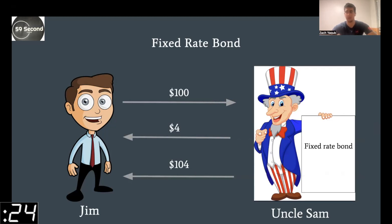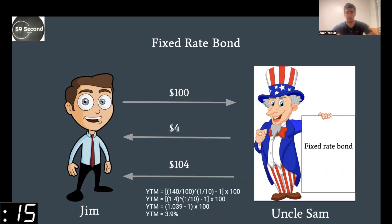What if Jim had invested his money in stocks? What interest rate would he have needed to compound his money to make $40 over 10 years? Using this formula, we can calculate the yield to maturity — the interest rate he would have needed — to be 3.9%.